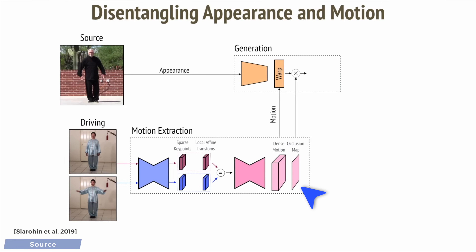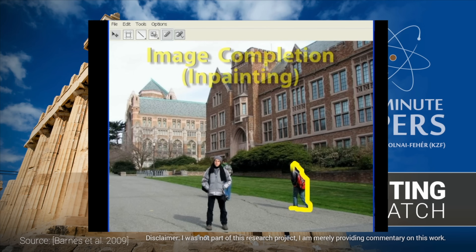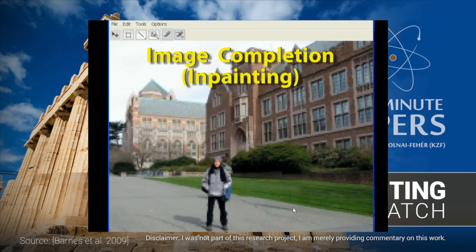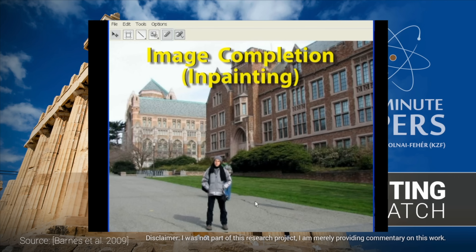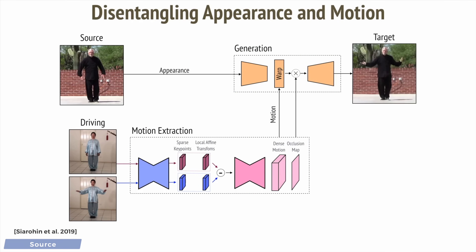The generator takes into consideration possible occlusions that may occur. This means that some parts of the image may now be uncovered, where we don't know what the background should look like. Normally, we would do this by hand with an image inpainting technique — for instance, the legendary PatchMatch algorithm — however, in this case, the neural network does it automatically by itself. If you are seeking for flaws in the output, these will be important regions to look at.